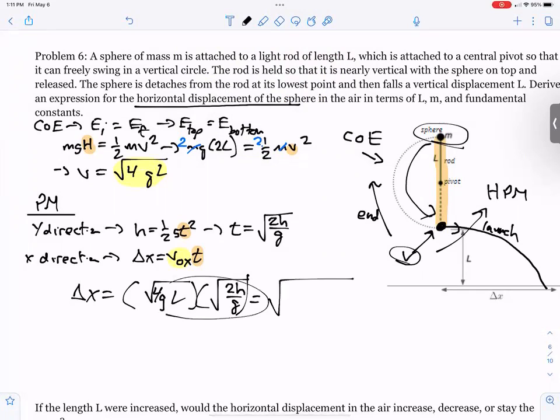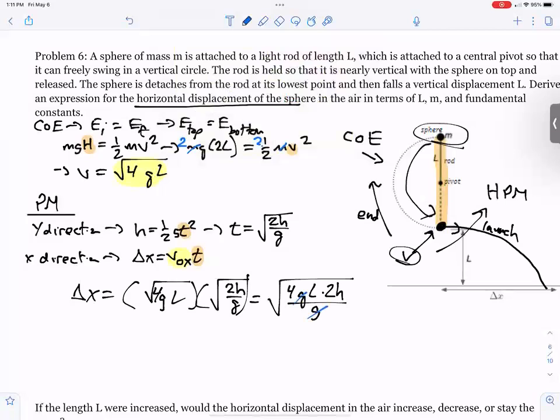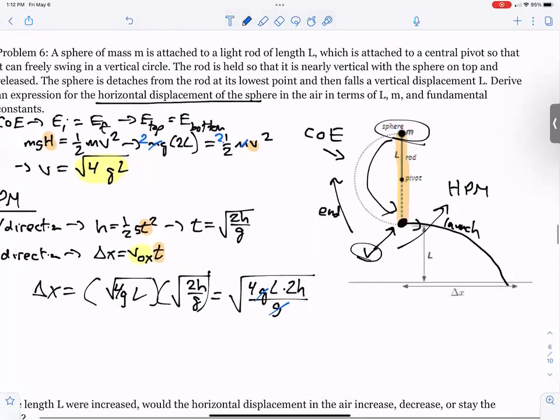Put those two underneath one radical and we get 4GL times 2H divided by G. Cancels, cancels. Now, the height, the height would be equal to what? Well, that's equal to L, isn't it? So we need to change that up too.